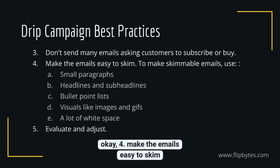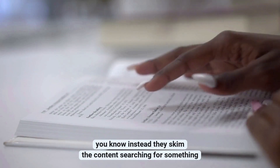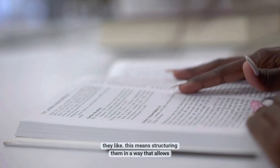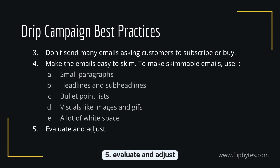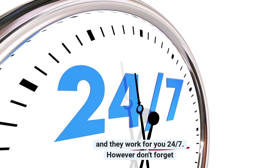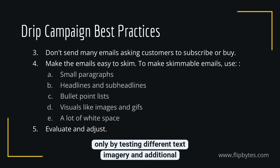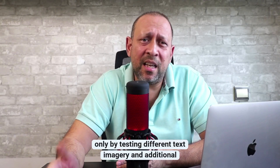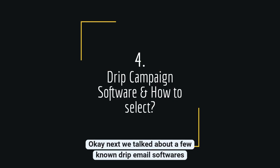Four: make emails easy to skim. Most email recipients don't read the entire email — instead they skim the content searching for something they like. Structure emails in a way that allows them to quickly take in as much information as possible. Five: evaluate and adjust. Drip campaigns are convenient and time-saving — set them up once and they work for you 24/7. However, don't forget to follow their results and adjust if needed. Only by testing different texts, imagery, and additional information will you find what best works for your customers.